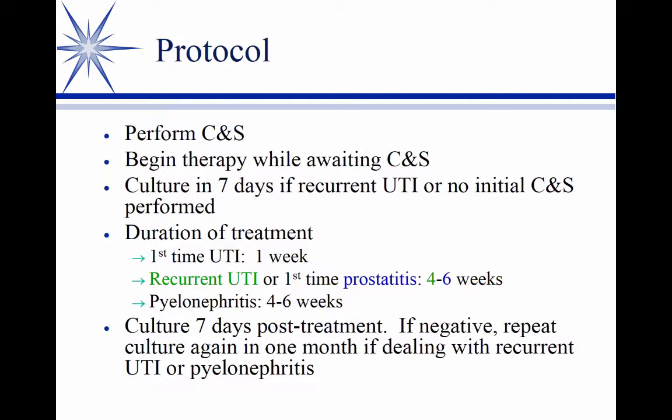How long do we treat UTIs? We have almost no evidence to direct this — what you're seeing here is a consensus from a task force, an expert committee — that's our best guess. We used to treat first-time uncomplicated UTIs for two weeks. We've reduced that now to one week. This is still longer than humans — it's not uncommon for physicians to treat women for three days, and there were some protocols with a single high-dose treatment. We don't even know if one week is the right time.